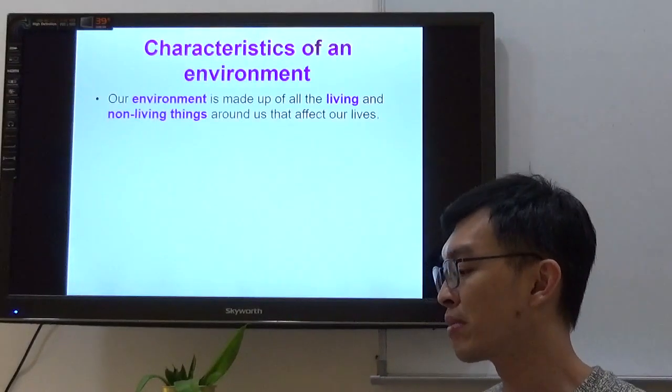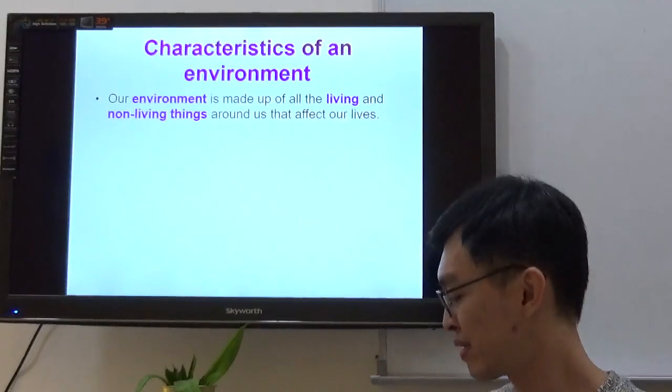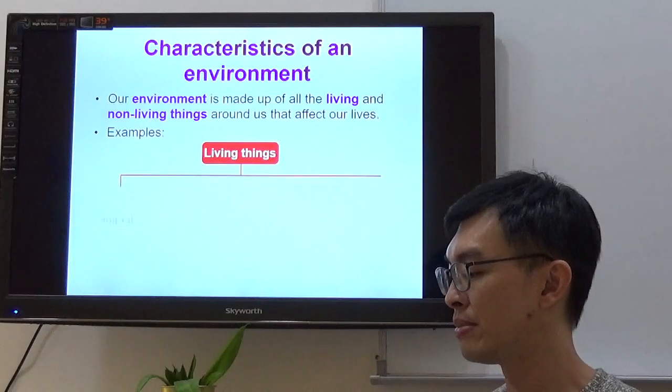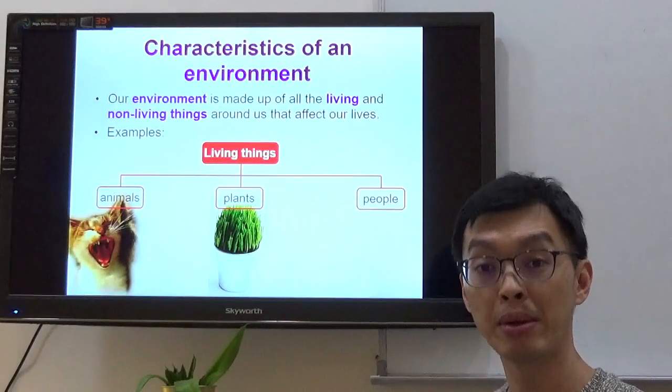Let's run through. Our environment is made up of all the living and non-living things around us that affect our lives. For example, let's talk about living things. Animals, plants, and people.